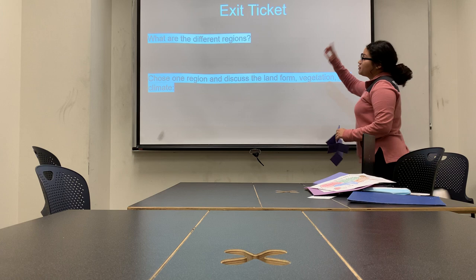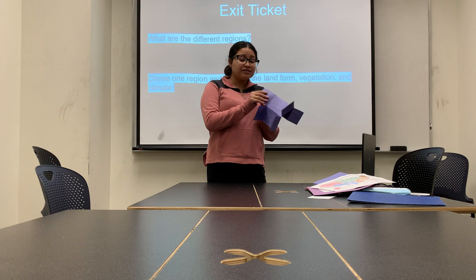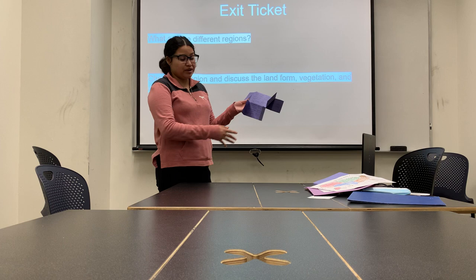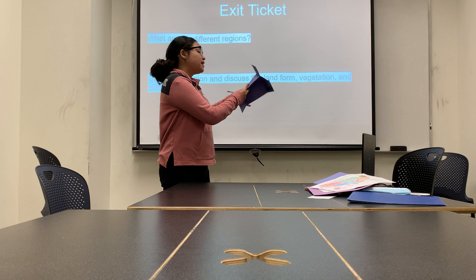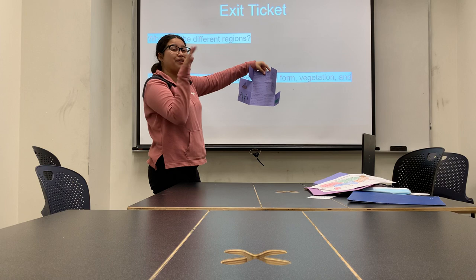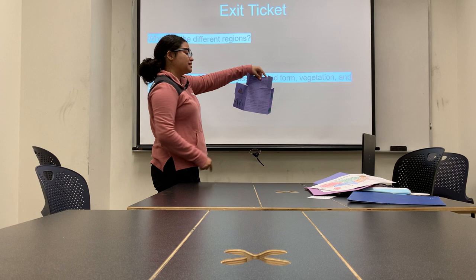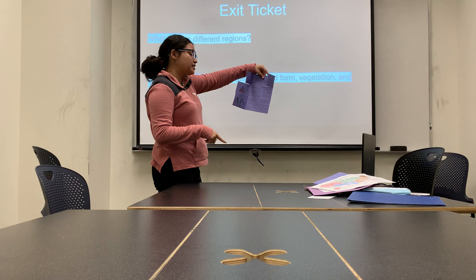Now I'm just going to go through it quickly because we have to do the exit ticket. For regions, we talked about the Northeast, Southwest, Southeast, and West regions. For mountains: highly elevated, defined with a peak, found in the Northeast region. For valleys: low area between hills or mountains, deep-sided, found in the Northeast region. For coastal plains: flat land bordering the ocean, found in the Southwest and Southeast regions. For hills: a bump in the landscape, lower altitude, round top, found in the Midwest region. For plains: broad area of flat land, occurs as lowlands along valleys, found in the Midwest and Southwest.